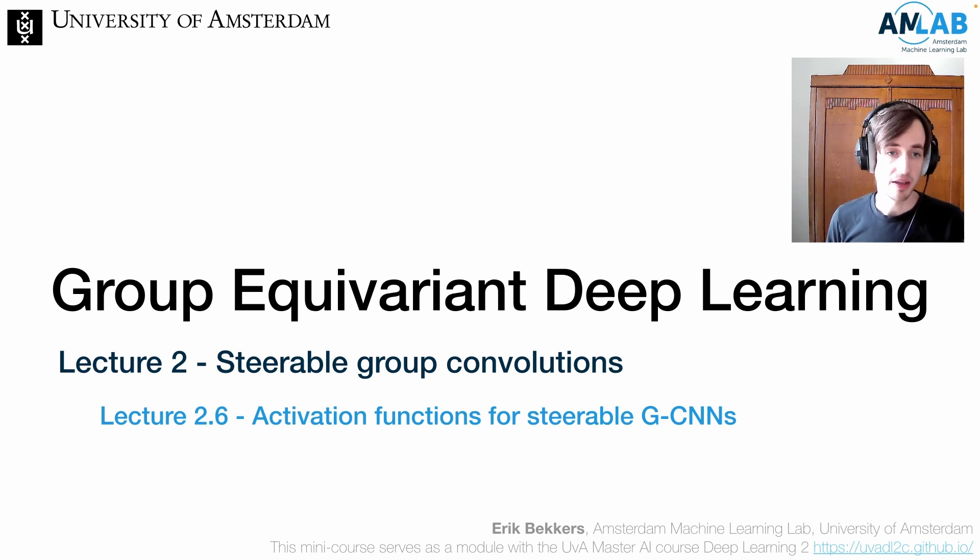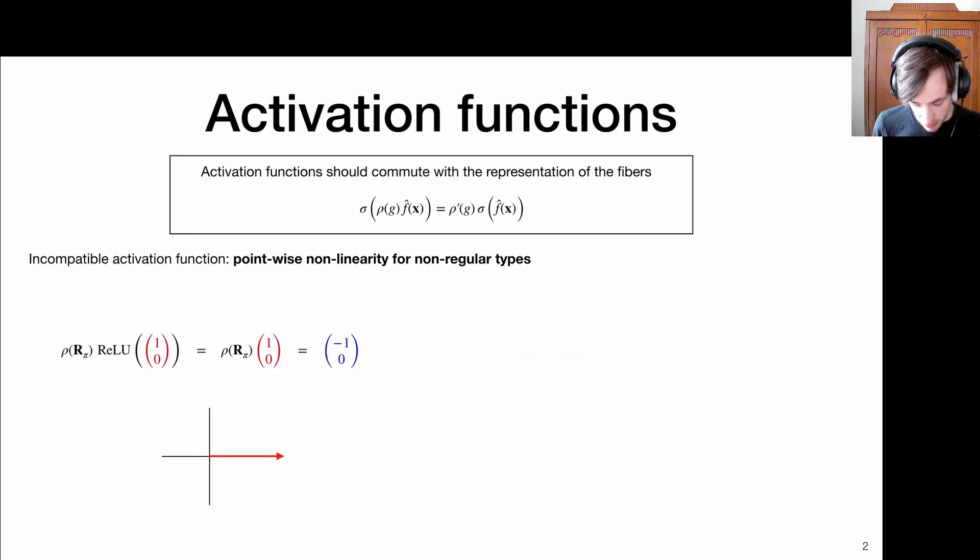Okay, welcome back. In this short video, we're going to take a look at what kind of activation functions can we use with steerable neural networks. And obviously the choice for activation function is an important element of your deep learning architecture design. So let's see what can we do. Now, above all, we want that also these activation functions are equivariant, right?